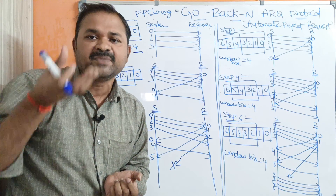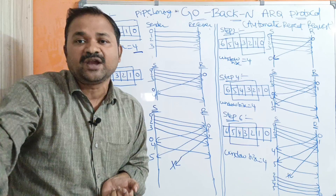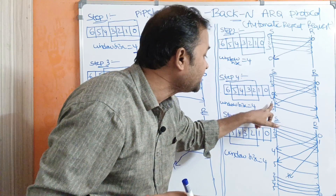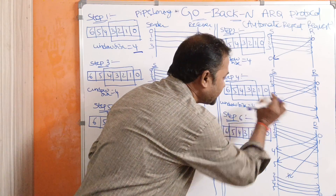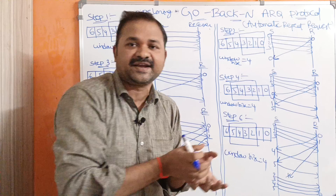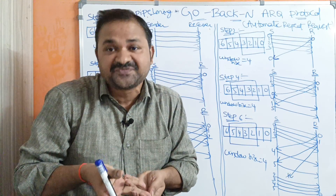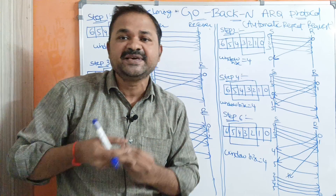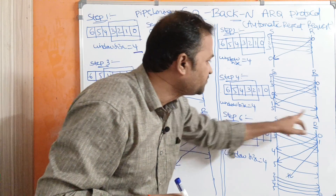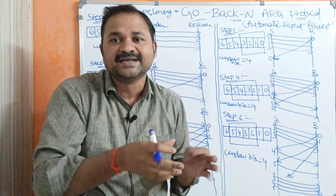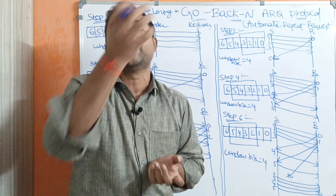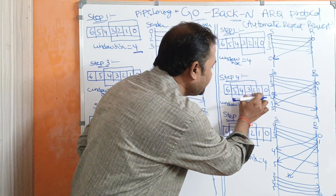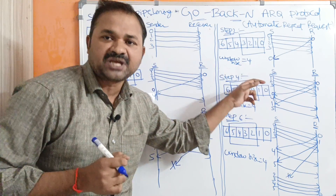After some time, the receiver receives frame number one. Upon receiving frame number one, the receiver provides an acknowledgement to the sender. After the sender receives this acknowledgement, one position is again free, so the sender sends the fifth frame. The window slides by one position — previously the window was from one to four, now it is from two to five.